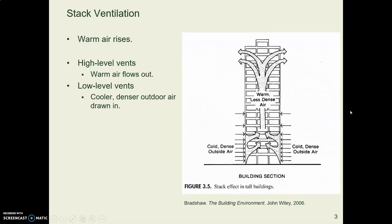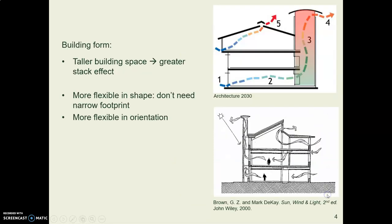Stack ventilation is based on the principle that warm air rises. In a building cooled by stack ventilation, you'll have a tall structure — a tower, a stack, a stairwell, something tall — with openings at the top so that warm air can flow out. That creates a partial suction and pulls cool air in from the bottom. The taller the space, the greater the stack effect. You don't need to worry as much about the shape of the building or what direction it's oriented, because it's all about the stack and the warm air rising.